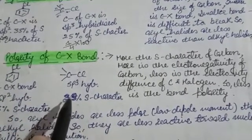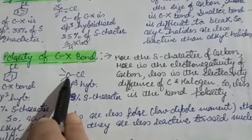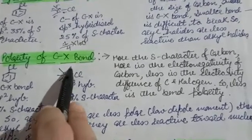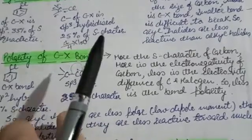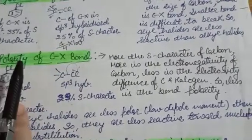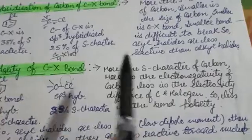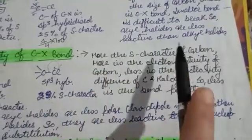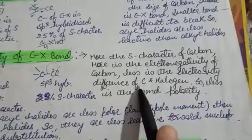In aryl halide, because the percentage S character is more, the carbon is more electronegative, so the bond will be less polar. But in alkyl halide, because the percentage S character is less, carbon will be less electronegative, so the bond will be more polar and easier to break.